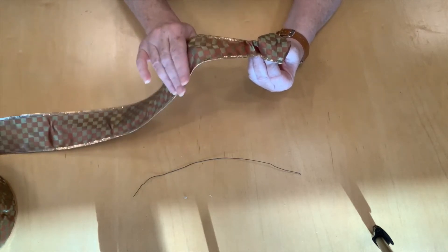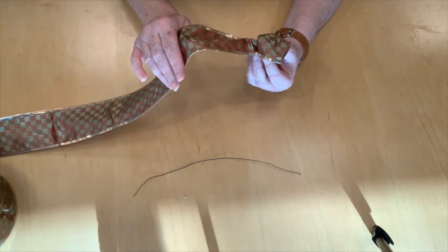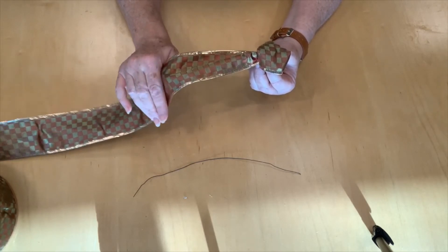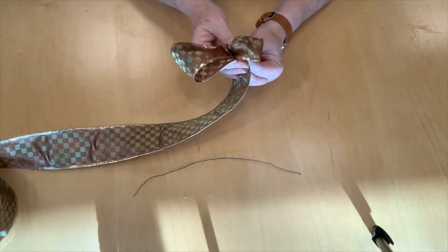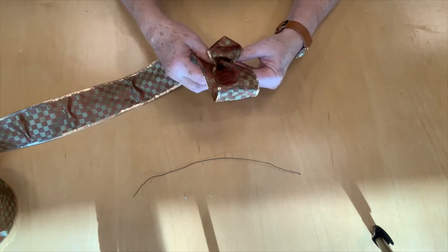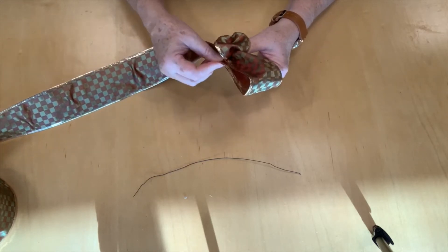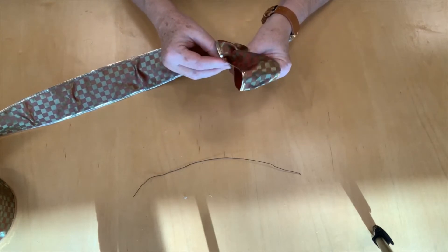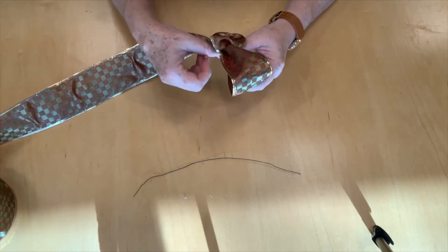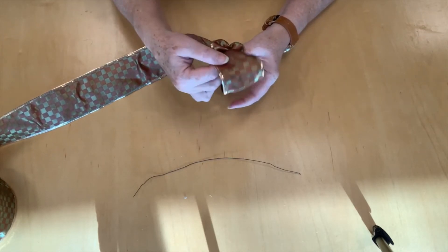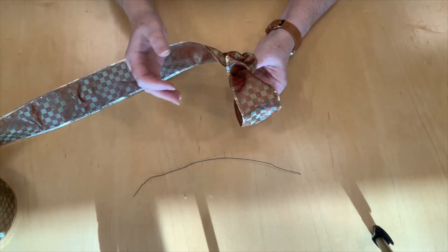Then you're going to start making the loops of your bow by taking your ribbon and folding it over to whatever size you'd like. Some people like to use a cutting board so that they're always doing the same size. I don't really care too much about that. I just kind of look at what size I'd like.